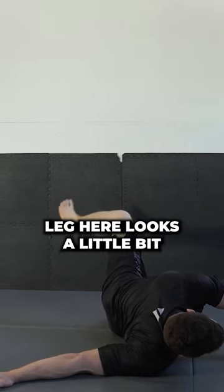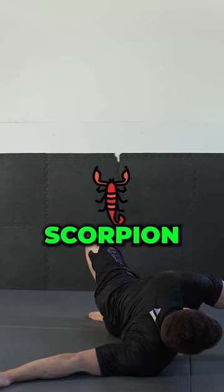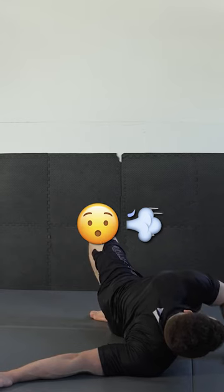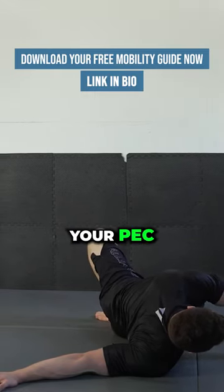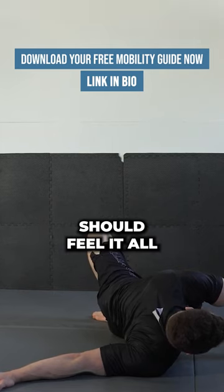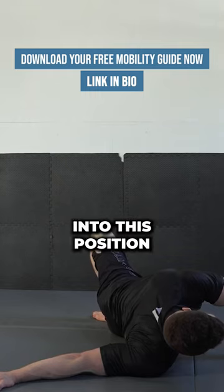So this leg here looks a little bit like a scorpion's tail. Hence why the name of the stretch is called scorpion. So you should be actively driving into the mat to open up your pec, open up your shoulder, should feel it all the way down your elbow as well. I'm going to breathe into this position.